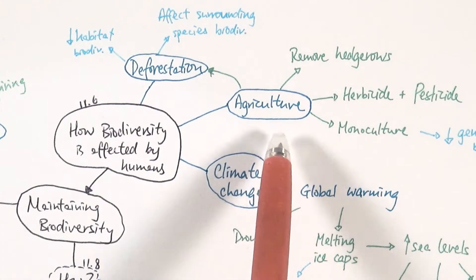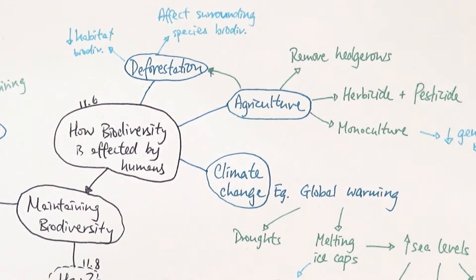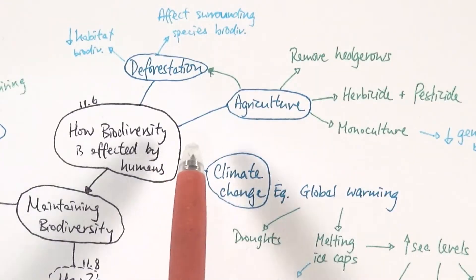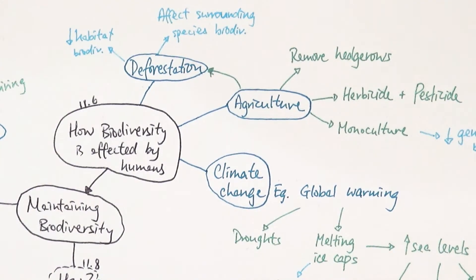The second factor is agriculture. As the human population grows, we need more farms to grow more food. This can lead to deforestation, as mentioned. We can also remove hedgerows to make more space, but hedgerows actually contain very high biodiversity that people are not really aware of. The use of herbicides and pesticides can also affect biodiversity, as they can be washed into rivers, leading to bioaccumulation and toxic levels becoming too high in larger fish.